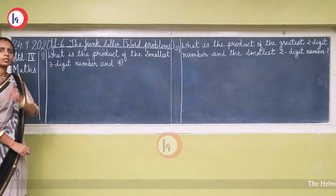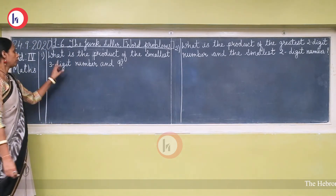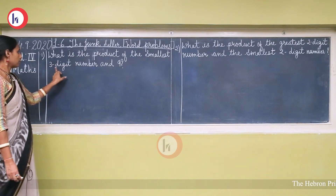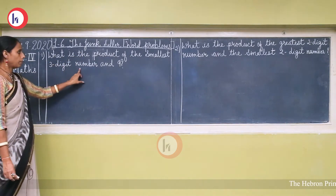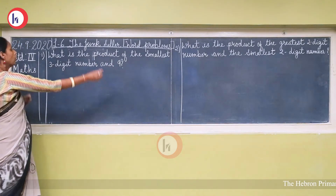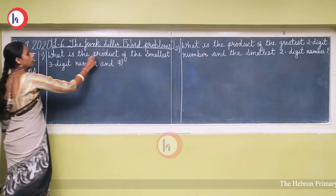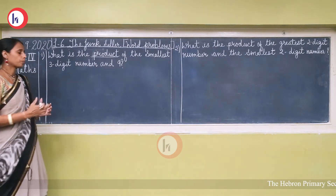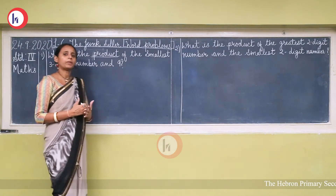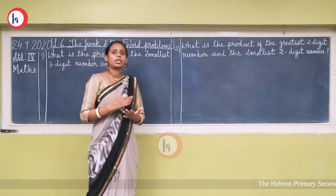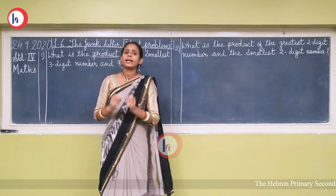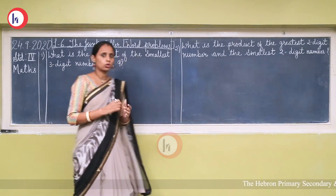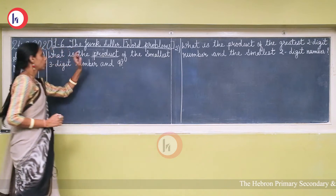We'll start with the first simple word problem: What is the product of the smallest three-digit number and nine? First, we should know what a product is. As explained in our last video, when we multiply two numbers, the answer we get is called a product.